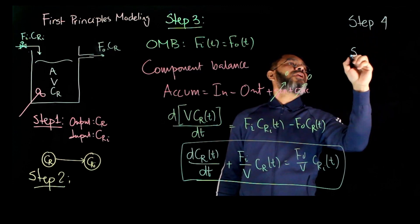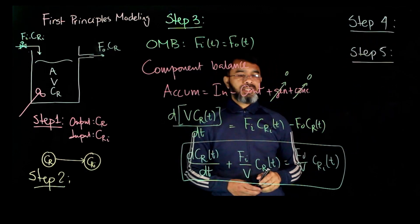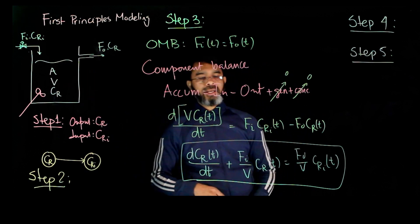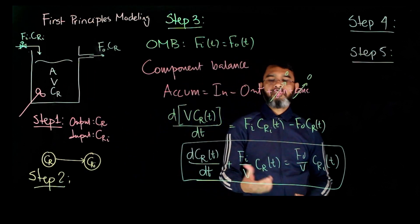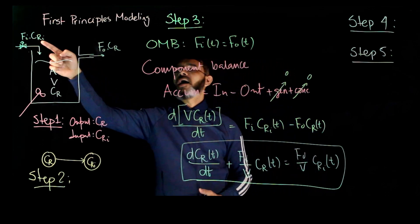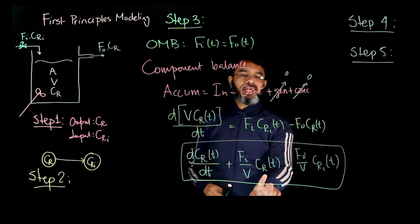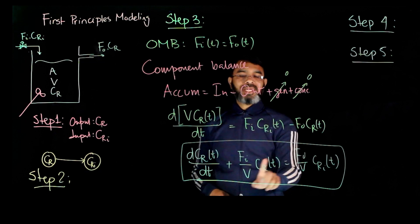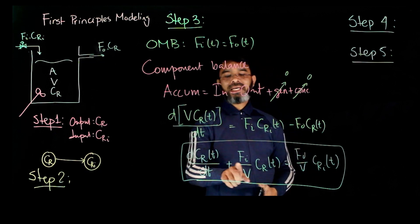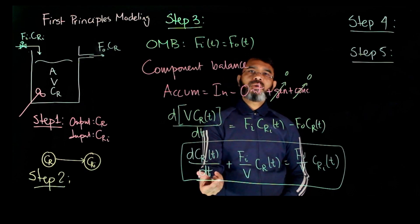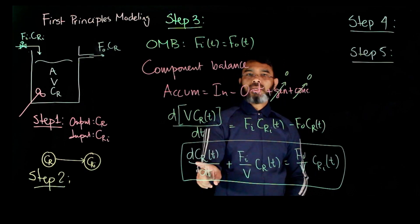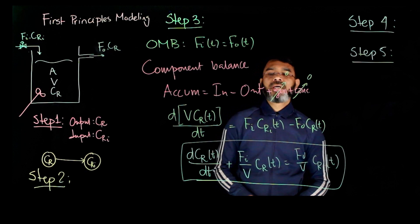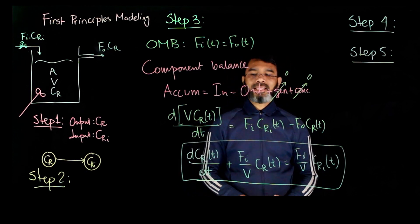Steps four and five involve simplification, standardization, and validation, to be discussed later. We can verify from the model equation that there is no relation between FI and CR. If CRI equals CR, then FI·CRI − FO·CR = 0, making dCR/dt = 0. So if only the flow rate changes while CRI = CR, there is no change in composition. However, if the inlet composition CRI changes, there will be a change in the composition of component R in the tank.